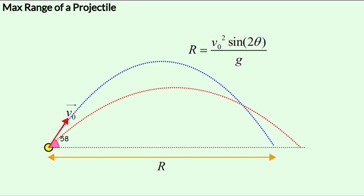So surely it must be possible to achieve the same range with two different launch angles for the same initial speed of launch. But let's try to achieve this mathematically.